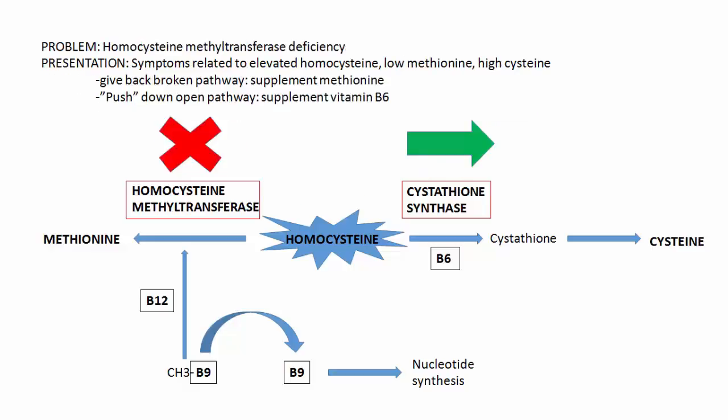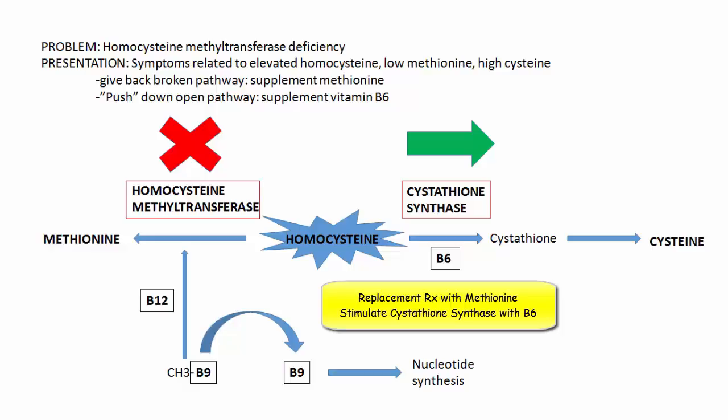Let's take a look at the opposite case. If we have a congenital deficiency of homocysteine methyltransferase, so the left-sided pathway is broken, we need to approach treatment by first giving back what's missing — so we need to give back methionine — and pushing down the open pathway by supplementing with vitamin B6. This achieves our goal of supplementing what's gone and at the same time creating a sink for homocysteine to prevent it from accumulating.